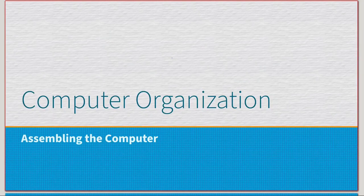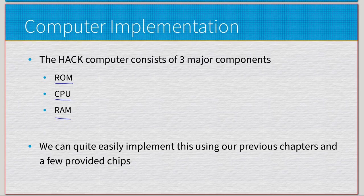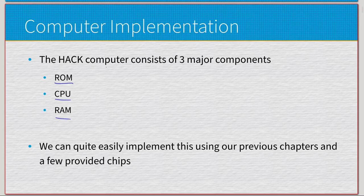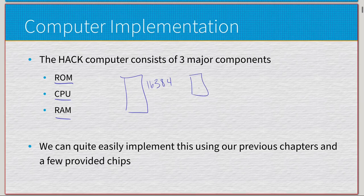The HAT computer consists of three major components: first ROM, next CPU, and finally RAM. ROM is just going to be the actual assembly procedures that we create and run against the computer — those binary strings that get sent through the computer. The CPU is going to be a combination of the ALU and some registers, mainly the D and the A register. Finally, we have RAM, which is that giant stack of 16,384 registers, but also the screen's 8,192 screen registers.